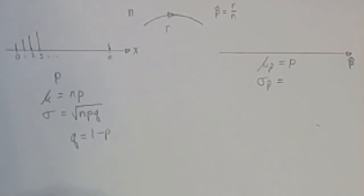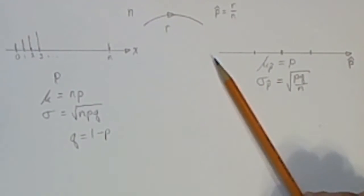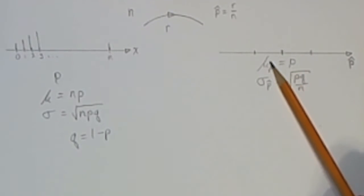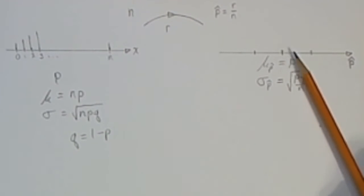The standard deviation of this distribution of sample proportions is the square root of p times q divided by n. I've put three marks on this number line showing where the mean is, and one standard deviation above and below the mean.